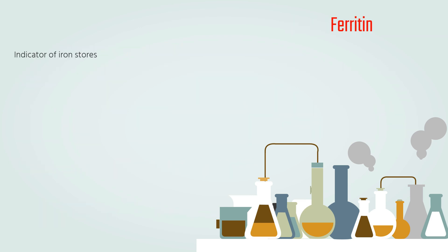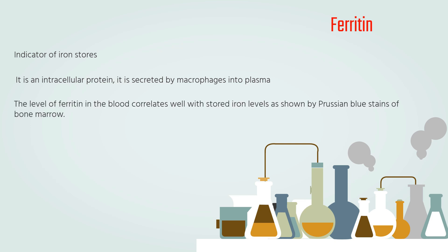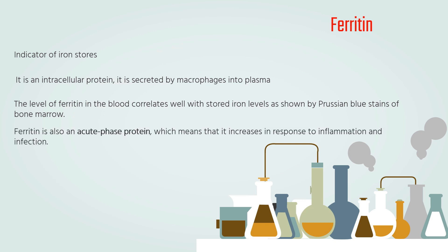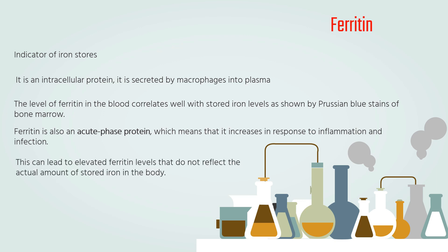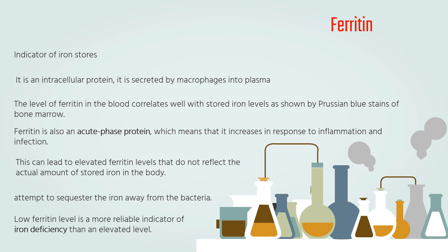Ferritin is the indicator of iron stores. It is an intracellular protein secreted by macrophages into plasma. The level of ferritin in the blood correlates well with stored iron levels as shown by Prussian Blue staining of bone marrow. Ferritin is also an acute phase protein, which means it increases in response to inflammation and infection. This can lead to elevated ferritin levels that do not reflect the actual amount of stored iron, as the body attempts to sequester iron away from bacteria. A low ferritin level is a more reliable indicator of iron deficiency than an elevated level.